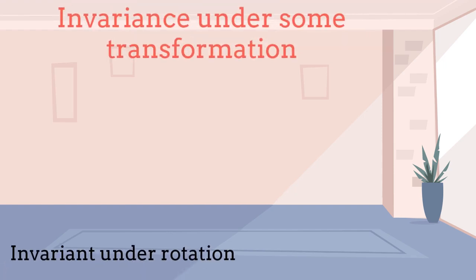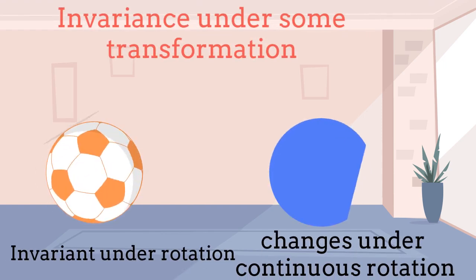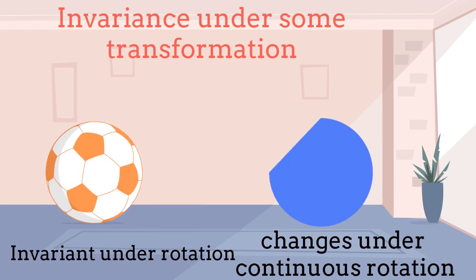When we talk about symmetry, we are talking about the invariance under some specific transformation in a system. For example, the soccer ball on the left-hand side is invariant under rotations around any one of its central axes. Then we can say that it has a symmetry under rotations. On the other hand, the blue object on the right-hand side is not invariant under rotations around some of its central axes. This object breaks the rotational symmetry.